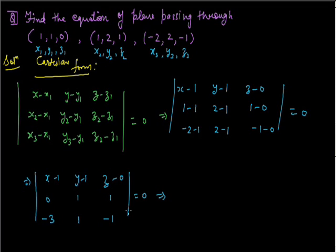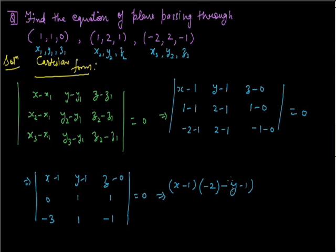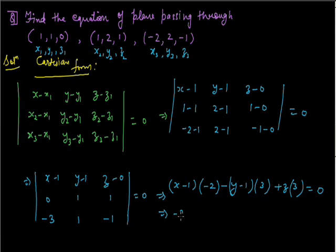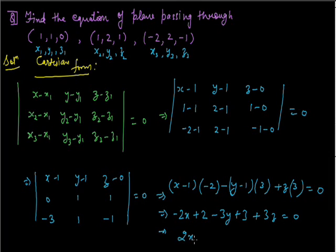Let's expand the determinant along the first row. We get (x minus 1) into (1×(-1) minus 1×1), that is -2. Minus (y minus 1) into (0×(-1) minus (-3)×1), that is 0 plus 3, hence 3. Plus z into (0×1 minus (-3)×1), that is 3. After simplification, it becomes -2x + 2 - 3y + 3 + 3z = 0, giving us 2x + 3y - 3z = 5.